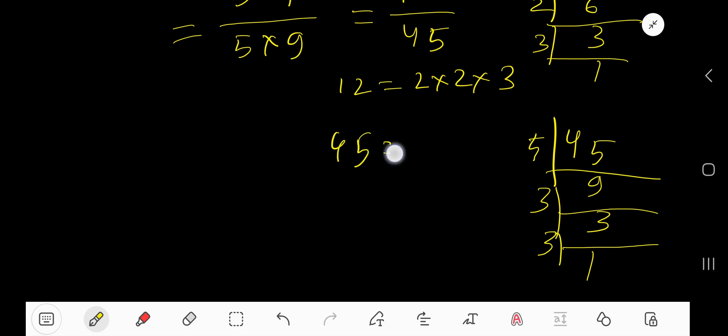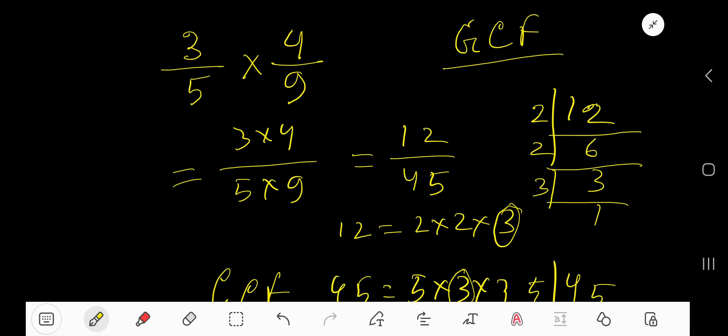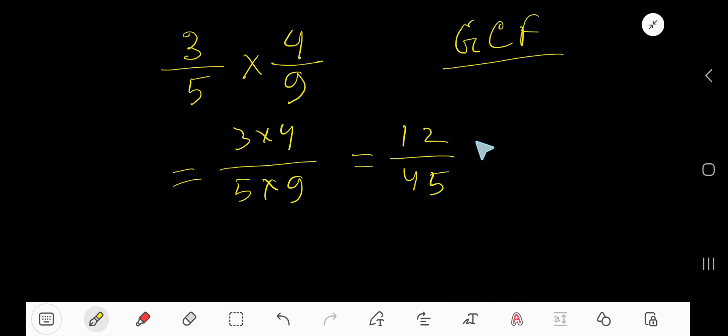So 45 equals 5 times 3 times 3. Now you need to find the greatest common factor. 5 is not a common factor, but 3 is the common factor. Greatest common factor is 3. So now divide both numbers by the greatest common factor.